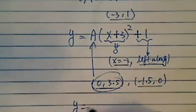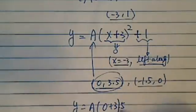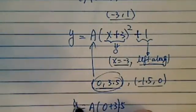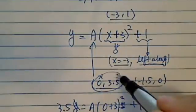So y is equal to A times 0 plus 3. So 3.5 equals 0 plus 3 squared and then plus 1. So 3.5, I just substituted, this is x, this is y. Y is 3.5.